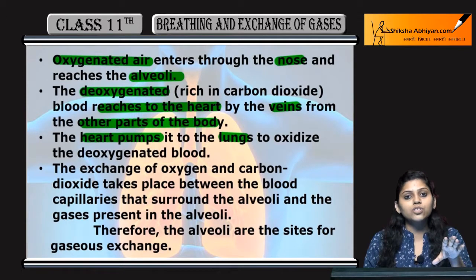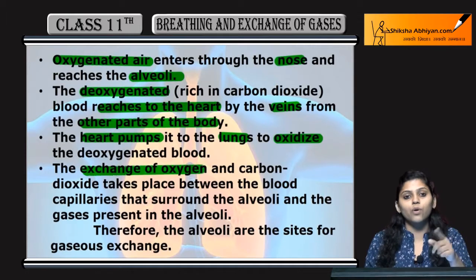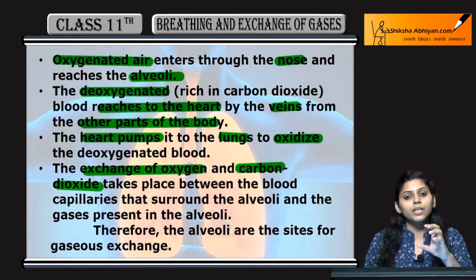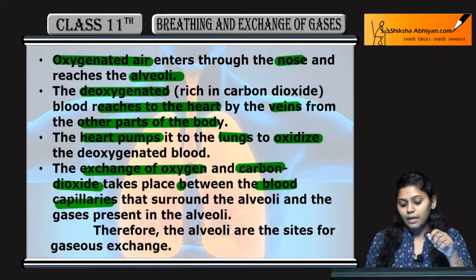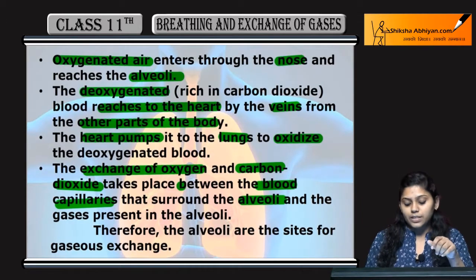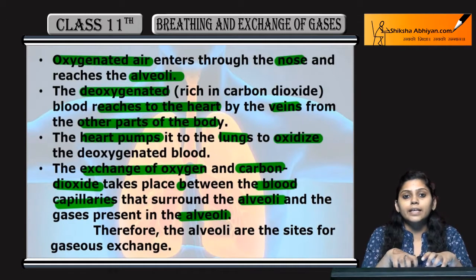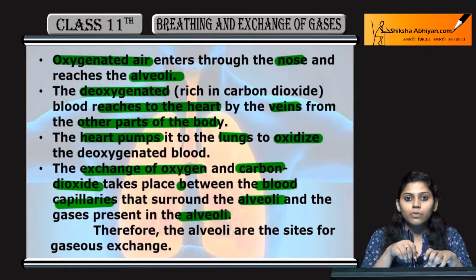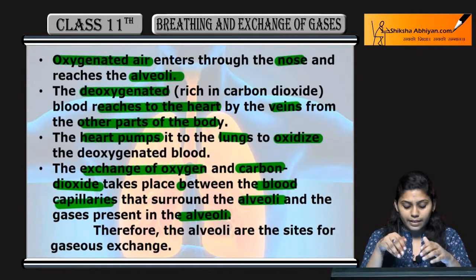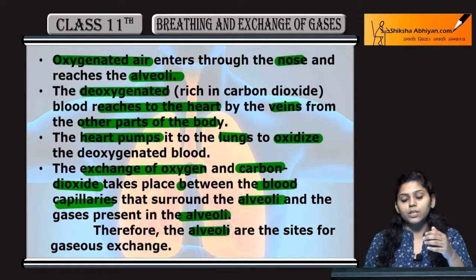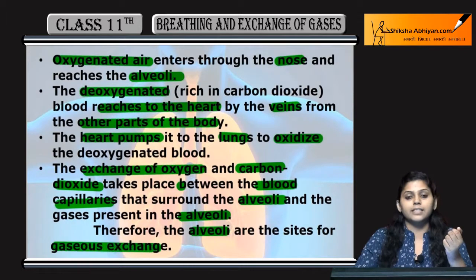In the lungs, deoxygenated blood gets oxidized — exchange of oxygen and carbon dioxide takes place. This exchange happens between the blood capillaries that surround the alveoli and the gases present inside the alveoli. Gaseous exchange between capillaries and alveoli involves oxygen and carbon dioxide. That is why alveoli are considered the site for gaseous exchange.